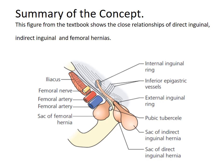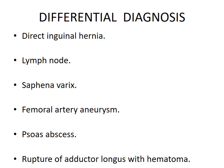This figure from the textbook shows the close relationships of direct inguinal, indirect inguinal, and femoral hernias, taken from Bailey and Love. Differential diagnosis of femoral hernia includes: direct inguinal hernia, lymph node, saphena varix, femoral artery aneurysm, psoas abscess, and rupture of adductor longus with hematoma.